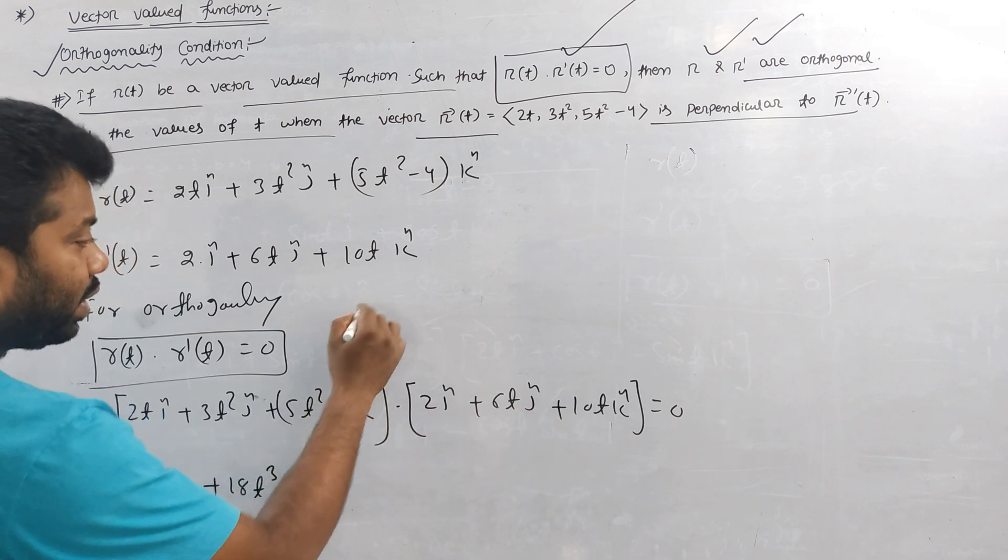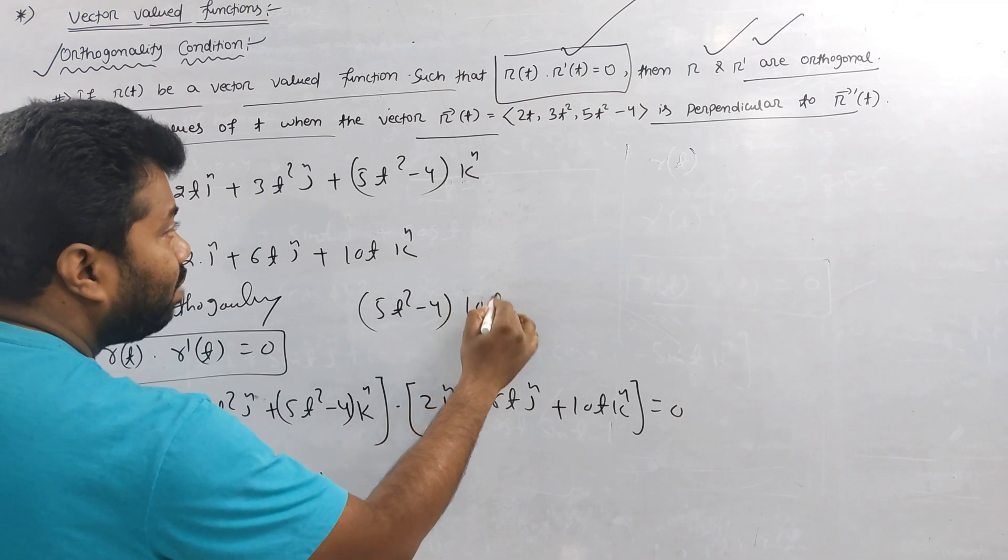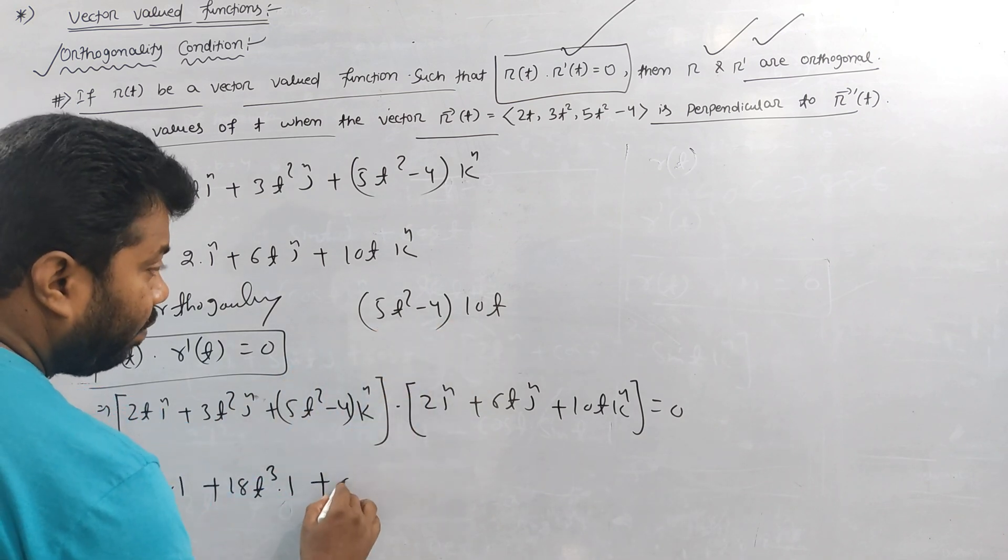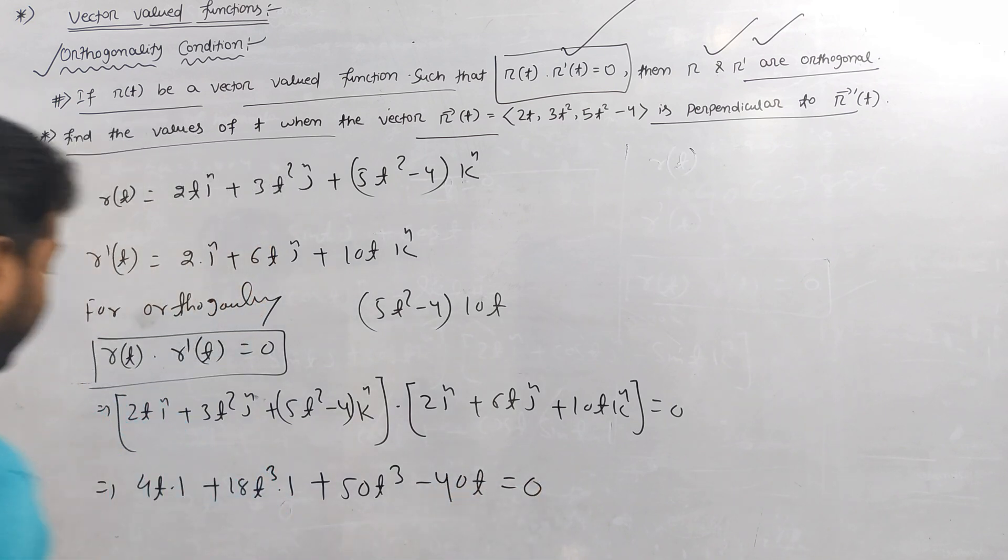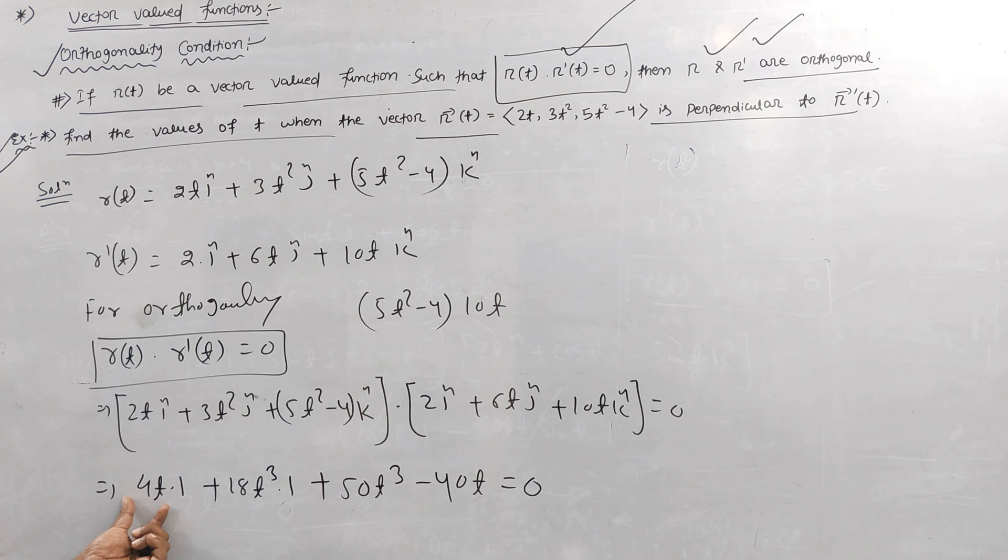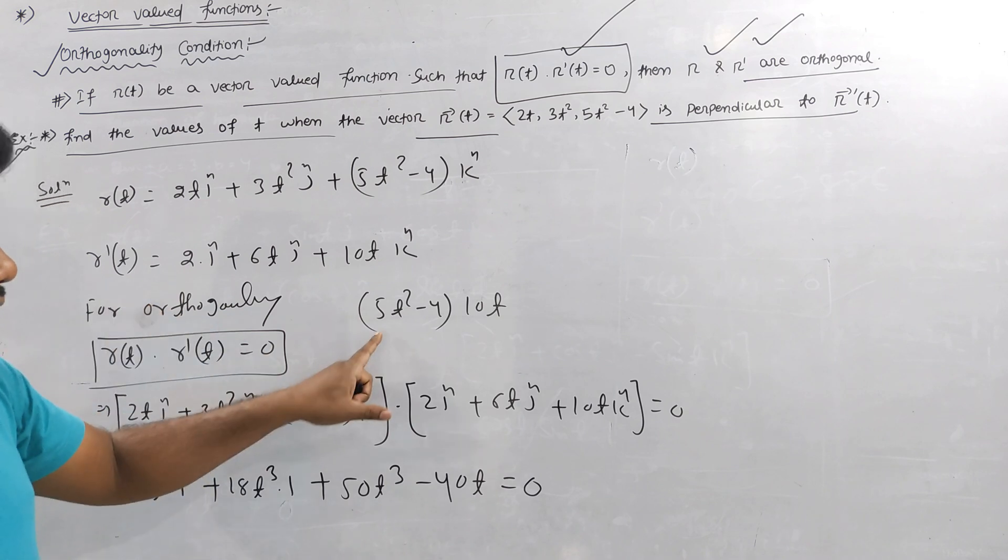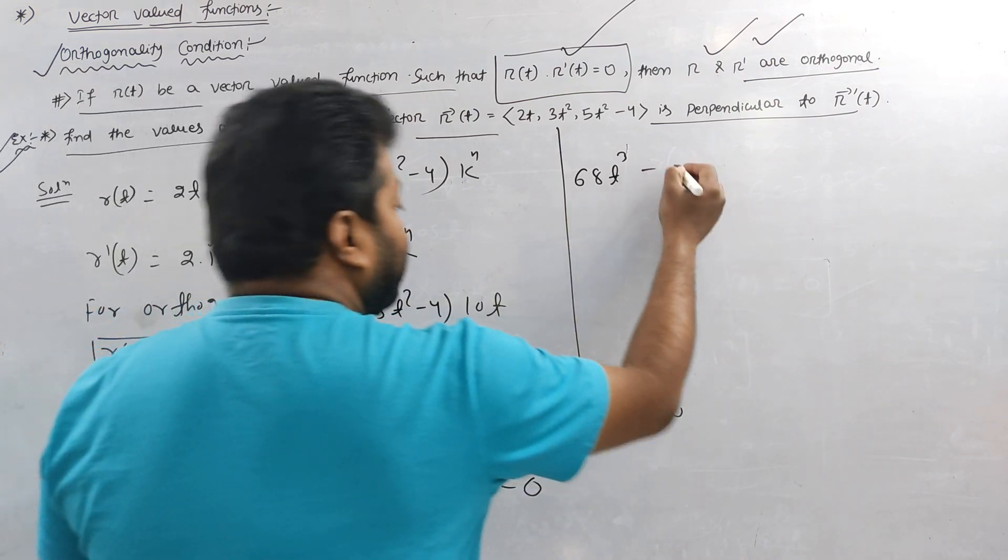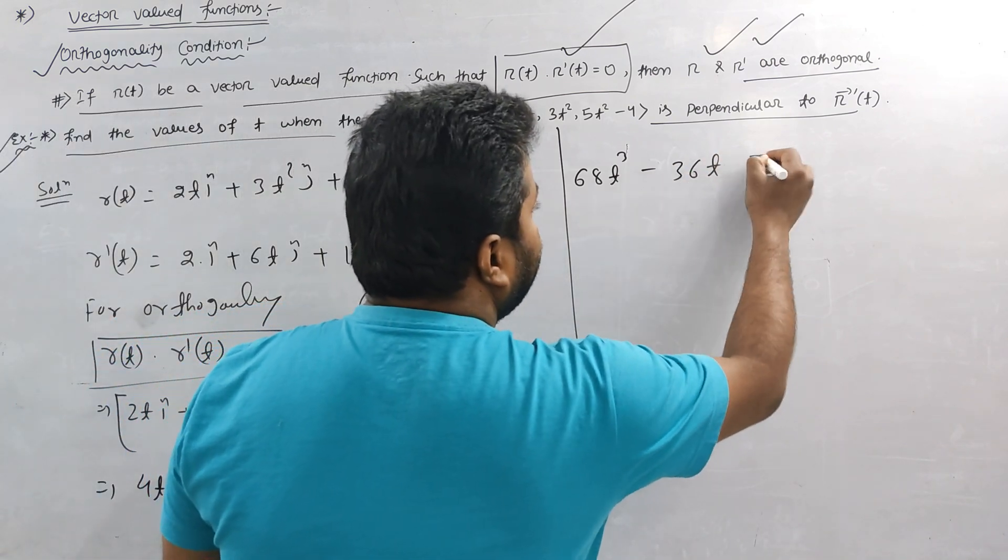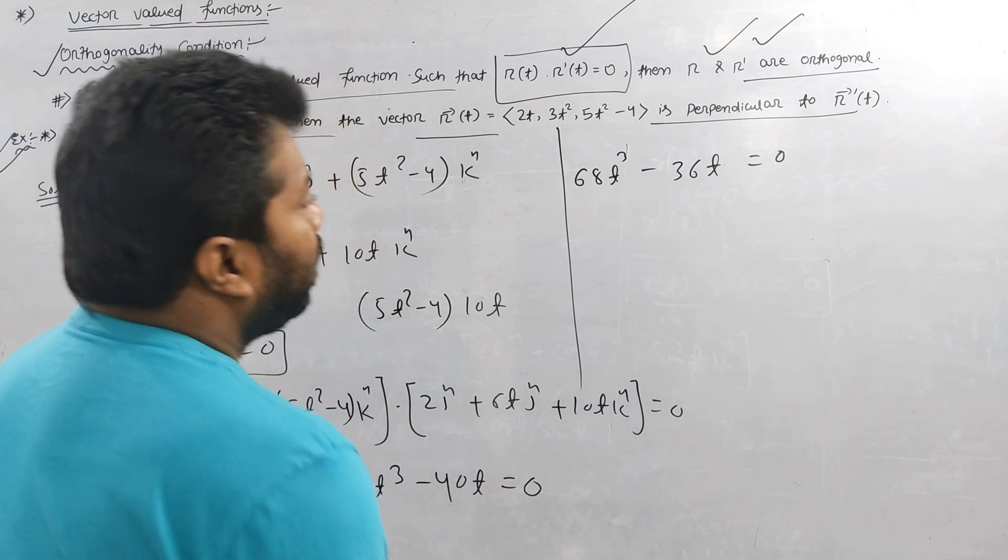Plus 5t square minus 4 times 10t is 50t cube minus 40t is equal to zero. Simplifying: 4t plus 18t cube plus 50t cube minus 40t is equal to zero. This gives 68t cube minus 36t is equal to zero.